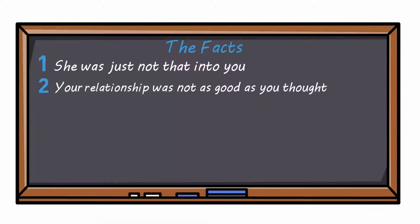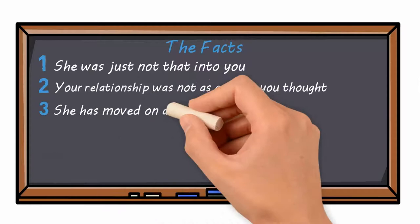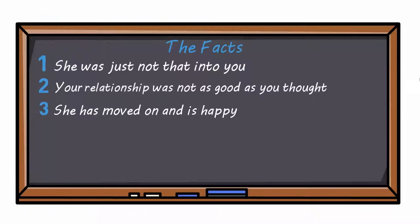Fact number three: she has moved on and is happy. Mark ignores the facts due to cognitive dissonance. He's unable to see the truth. And the simple truth is that she is happy with somebody else.